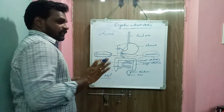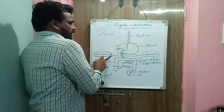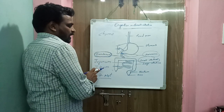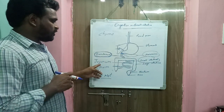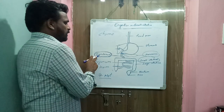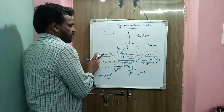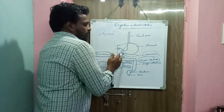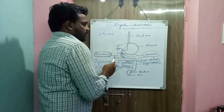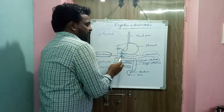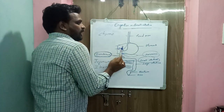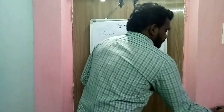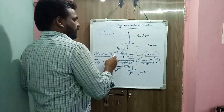In human beings, the small intestine is 7 meters in length and is divided into three parts: duodenum, jejunum, and ileum. The first part is the duodenum, which is U-shaped. The duodenum receives secretions from both the liver and the pancreas.